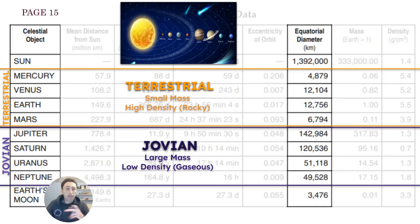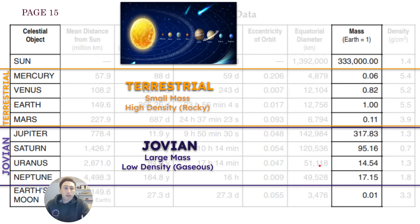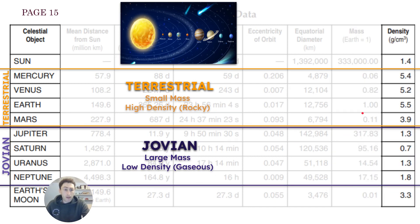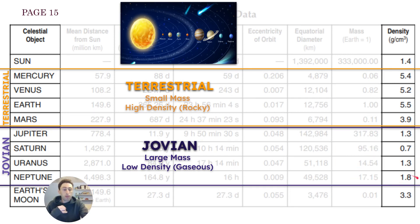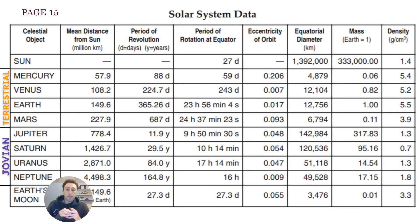We have the equatorial diameter, which is how big a planet is at its diameter. The terrestrial planets are much smaller in mass than the Jovian planets, which have a much bigger equatorial diameter. The terrestrial planets are smaller in mass compared to the Jovian planets, which are much more massive. However, the terrestrial planets are much higher in density — they are rocky — so you could stand on them. The Jovian planets have a much lower density, around 1.3 to 1.8, which causes them to be heavy gas, so they're called gas giants. That is the solar system data on page 15 of the reference table.